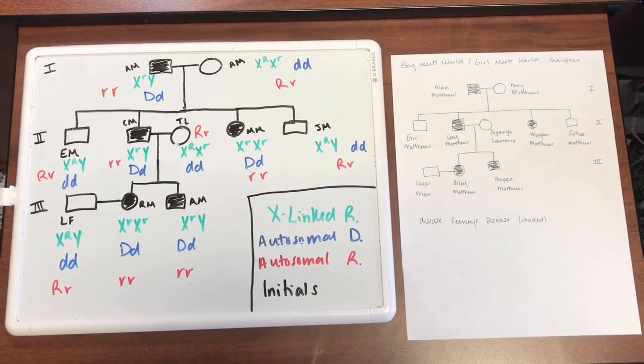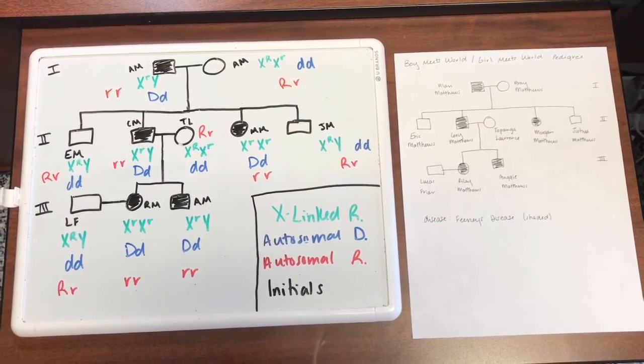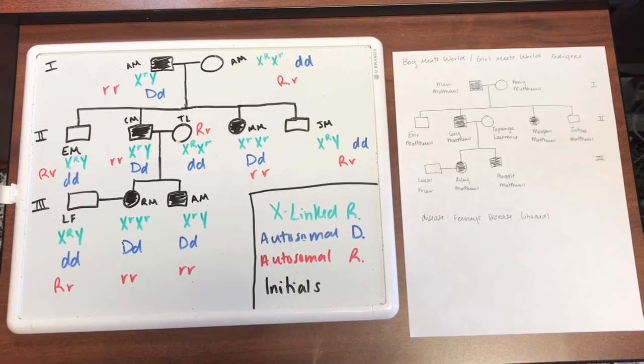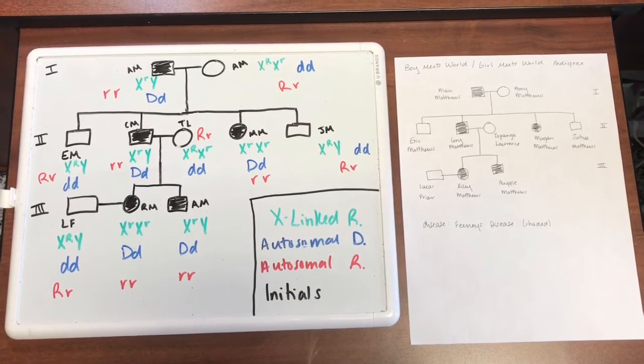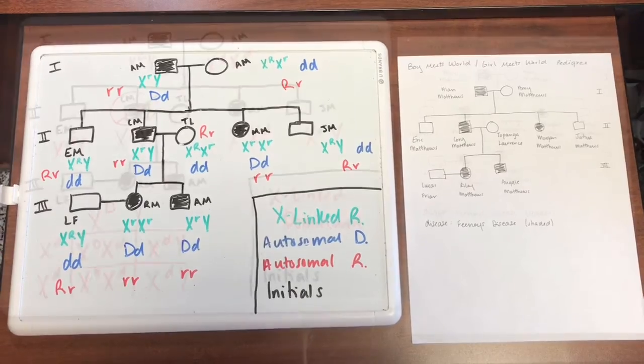For our pedigree, X-linked recessive, autosomal dominant, and autosomal recessive are all possible, and they are color-coded to be seen easier.